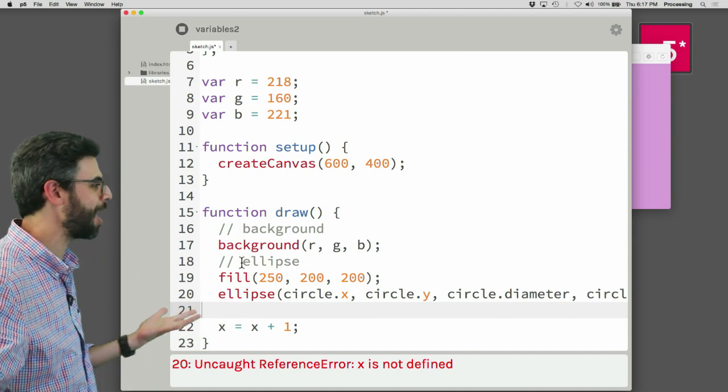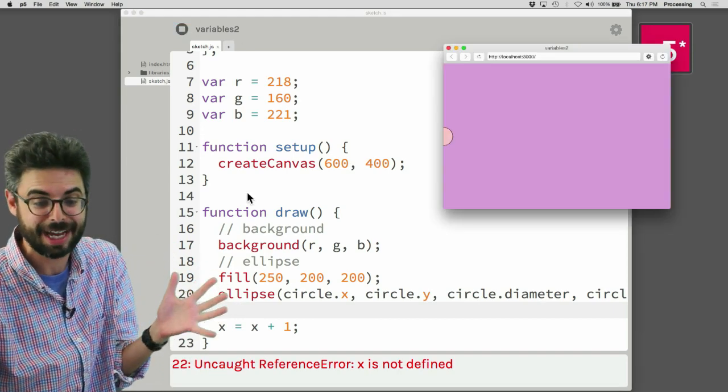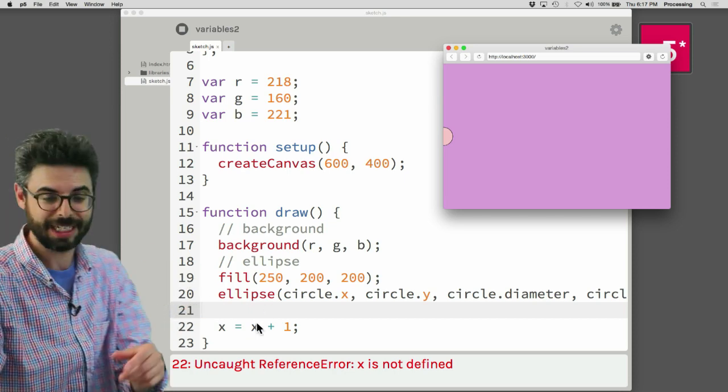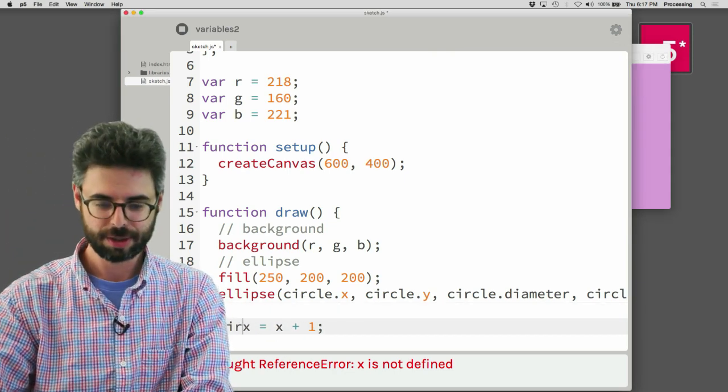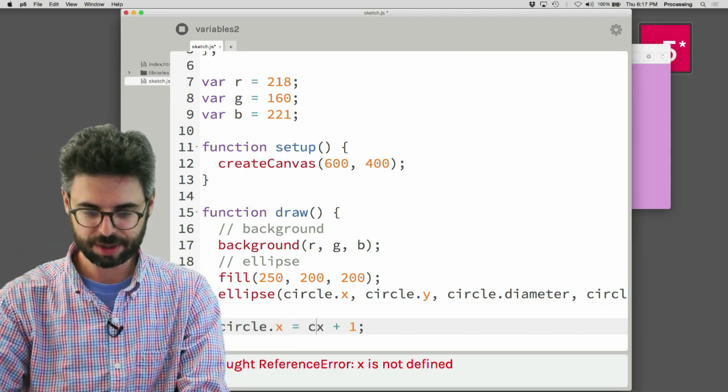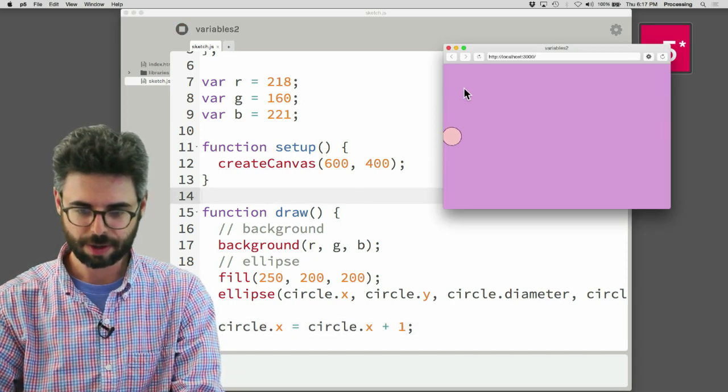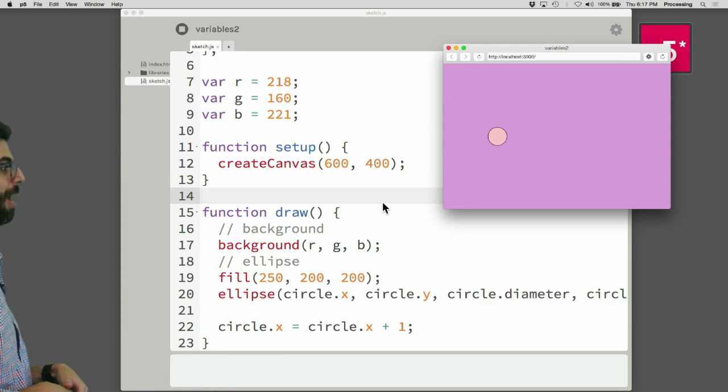OK. Oh! And look at this. I've already forgot. I almost ran this again, and it's going to say uncaught error, because on line 22, X is not defined, because I need to change this to circle dot X and circle dot X. So I run this, and we've got the same exact program now. Again, nothing new has happened here.